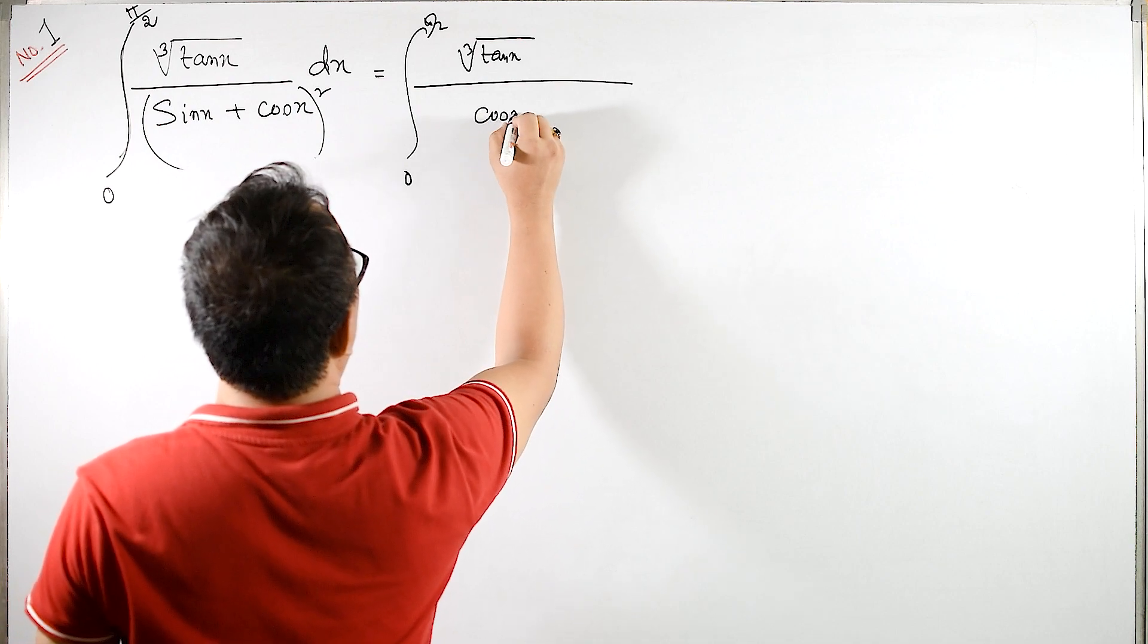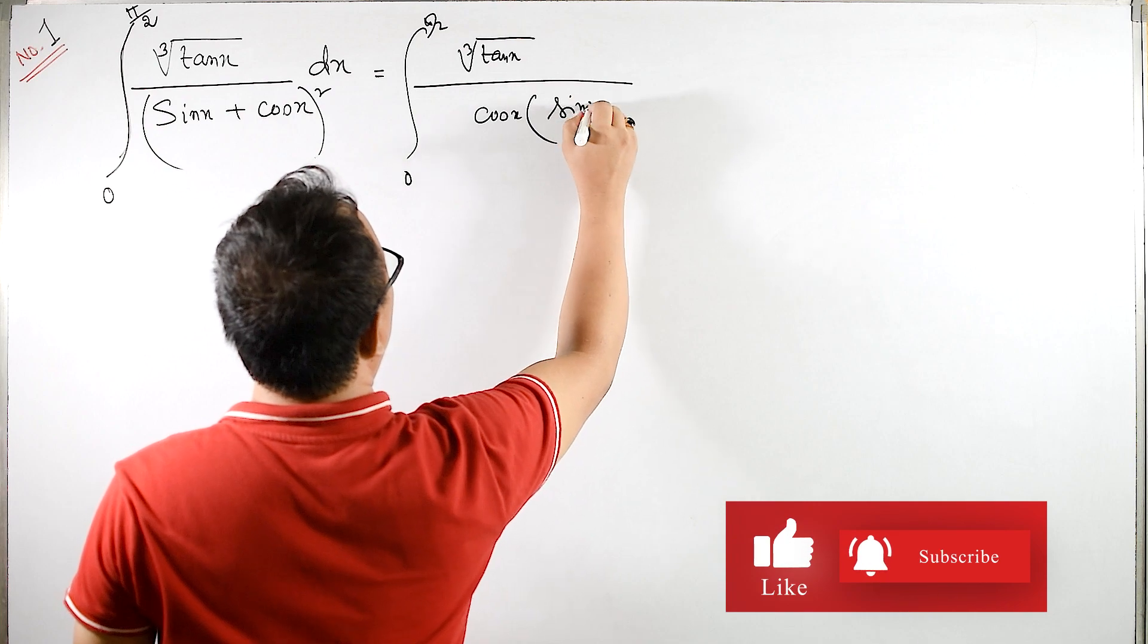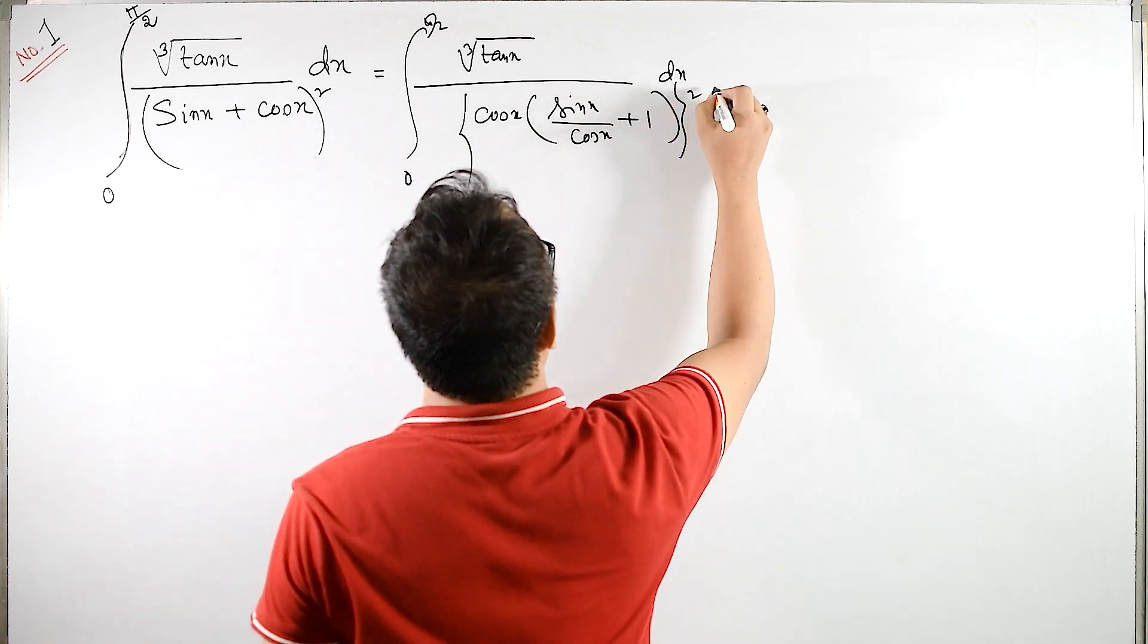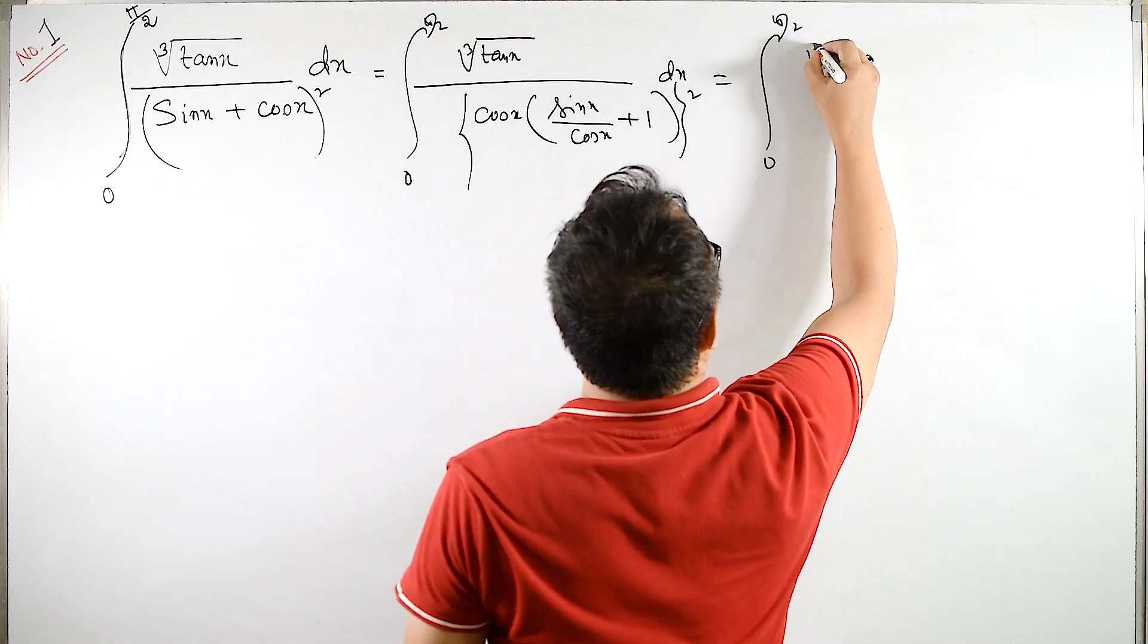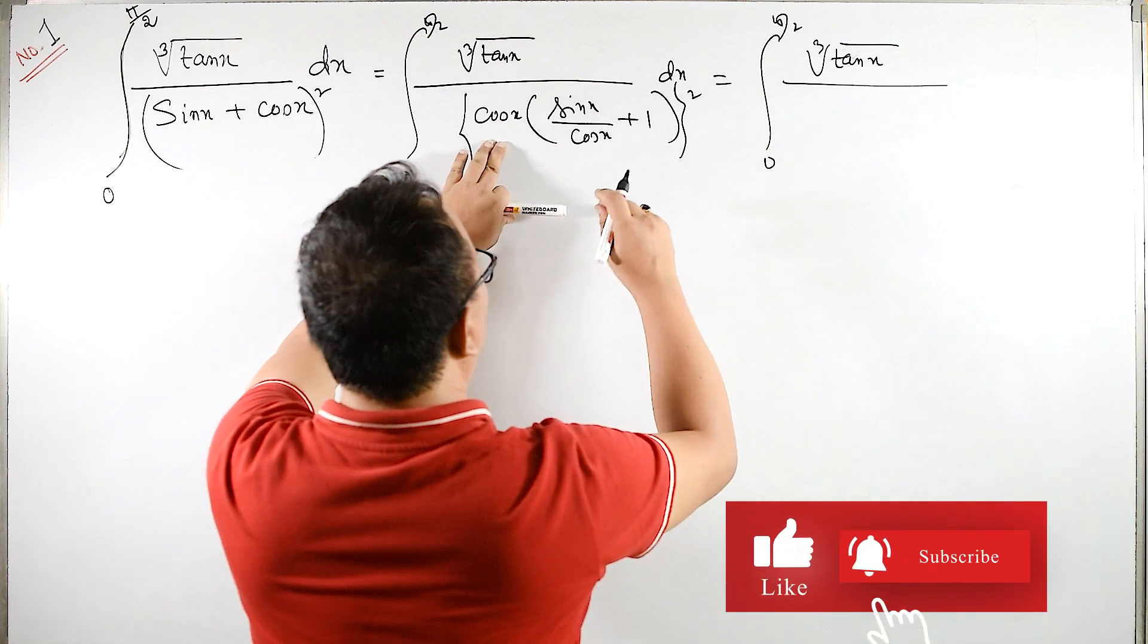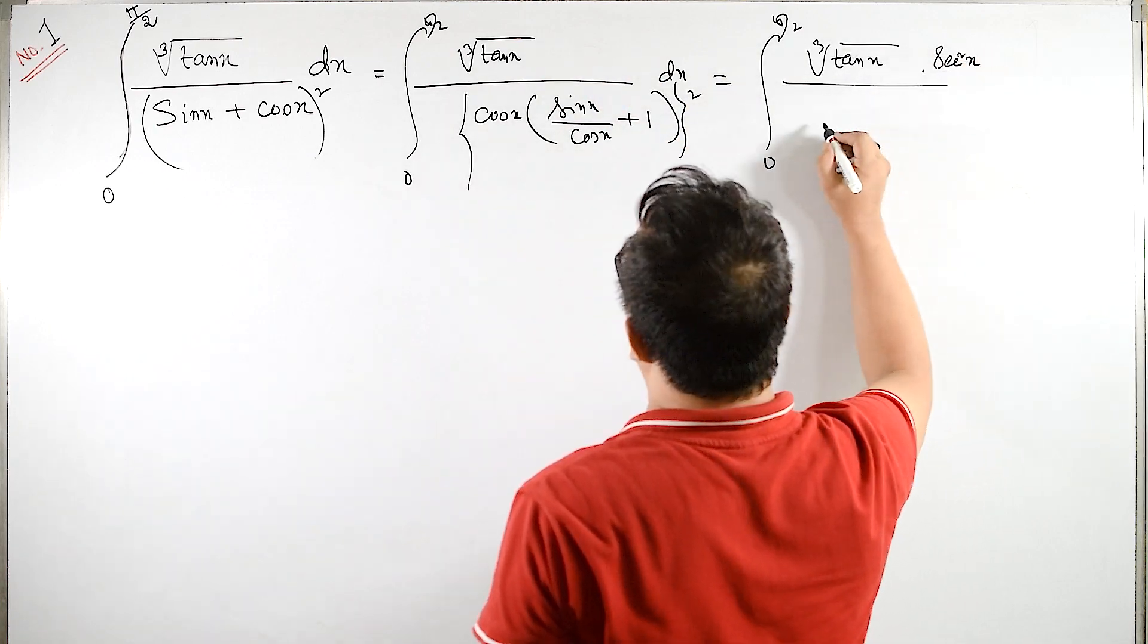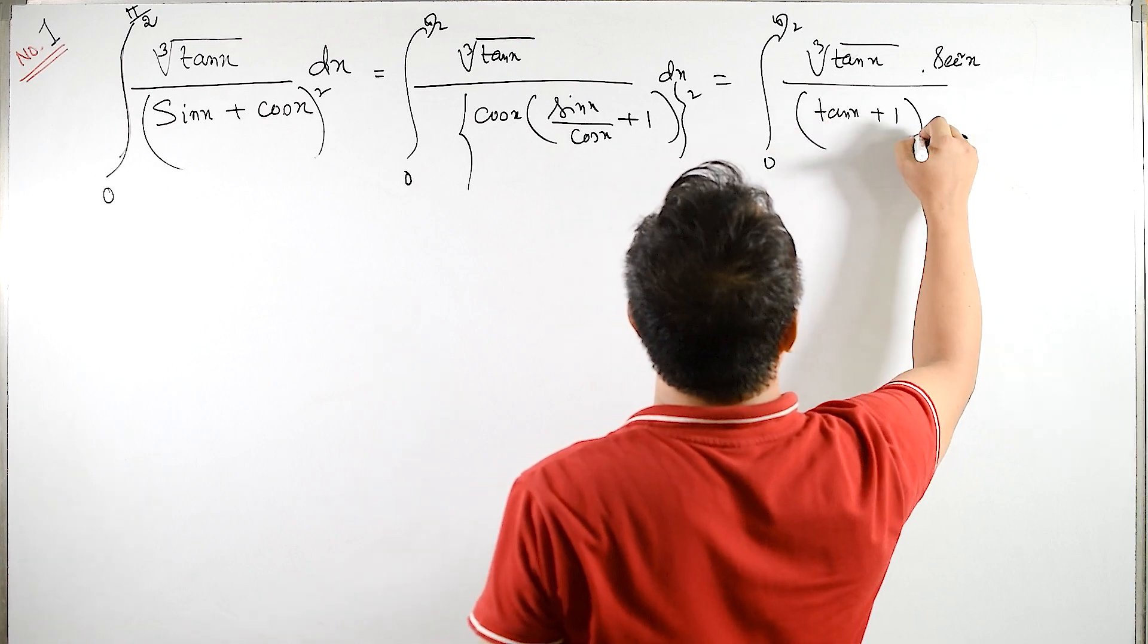So, cos x, if I take, then sin by cos, sin x upon cos x plus 1 into dx, the whole square equals to integral 0 to pi by 2, cube root of tan x upon. Here 1 by cos square will come up. So 1 by cos square is same as sin square x upon sin by cos is tan x plus 1, the whole square.